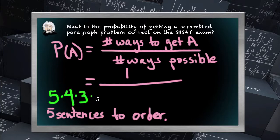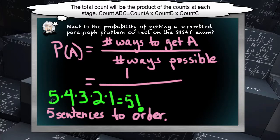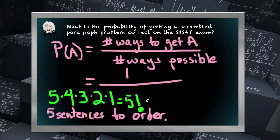For the third sentence, there'll be three possibilities left. And for the fourth, there'll only be two sentences left to choose from. And finally, once I've selected the first four sentences in place, my last sentence is determined to be the last sentence, so there's only one choice. This is five factorial ways to arrange the sentences of a scrambled paragraph, which is simply 5 times 4 is 20, times 3 is 60, times 2 is 120.